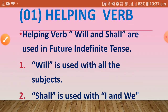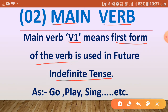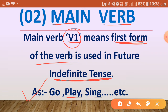Let us see the next rule: main verb. The main verb V1 — that is, the first form of the verb — is used in Future Indefinite Tense. The first form is also known as the base form or infinitive form of the verb, like 'go,' 'play,' 'sing,' etc.